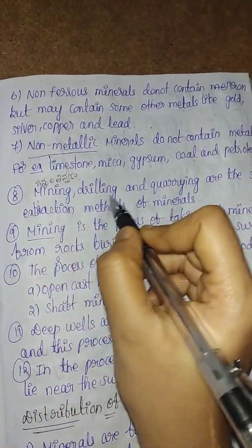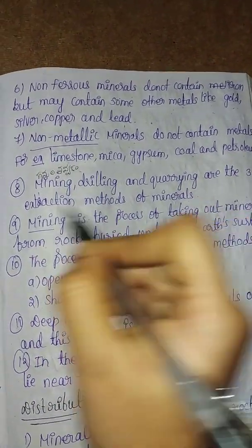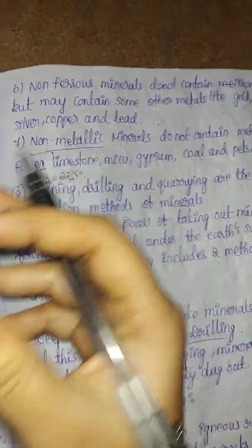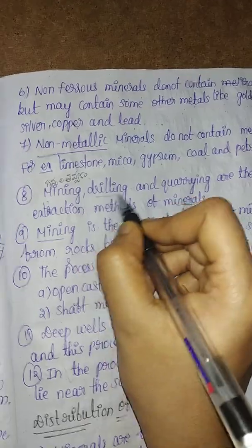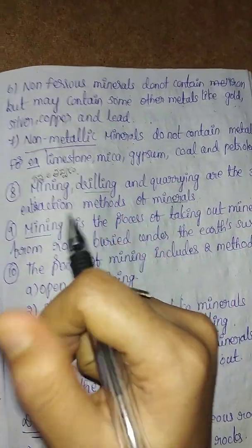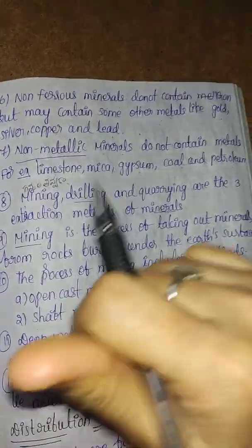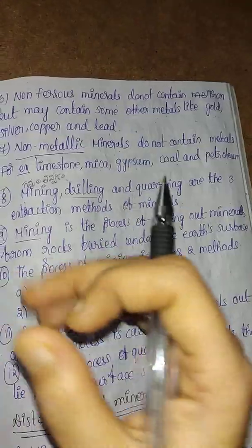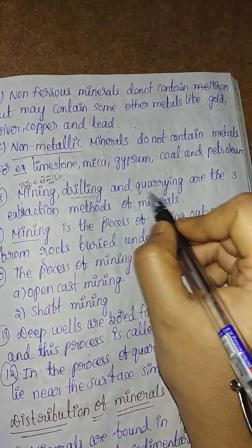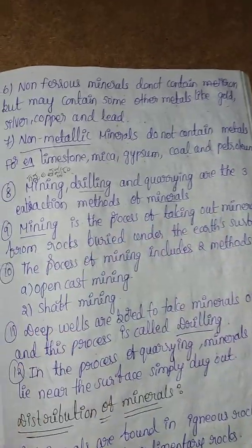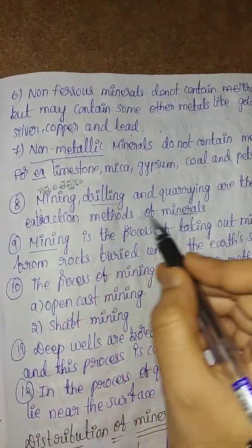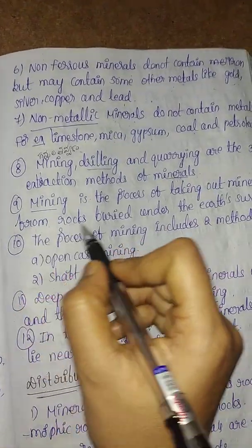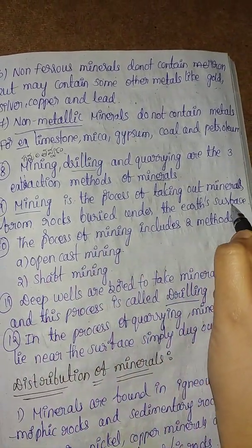Mining, drilling, and quarrying are the three extraction methods of minerals. We need to use drilling machines to extract minerals. Mining is the process of taking out minerals from rocks buried under the earth's surface.